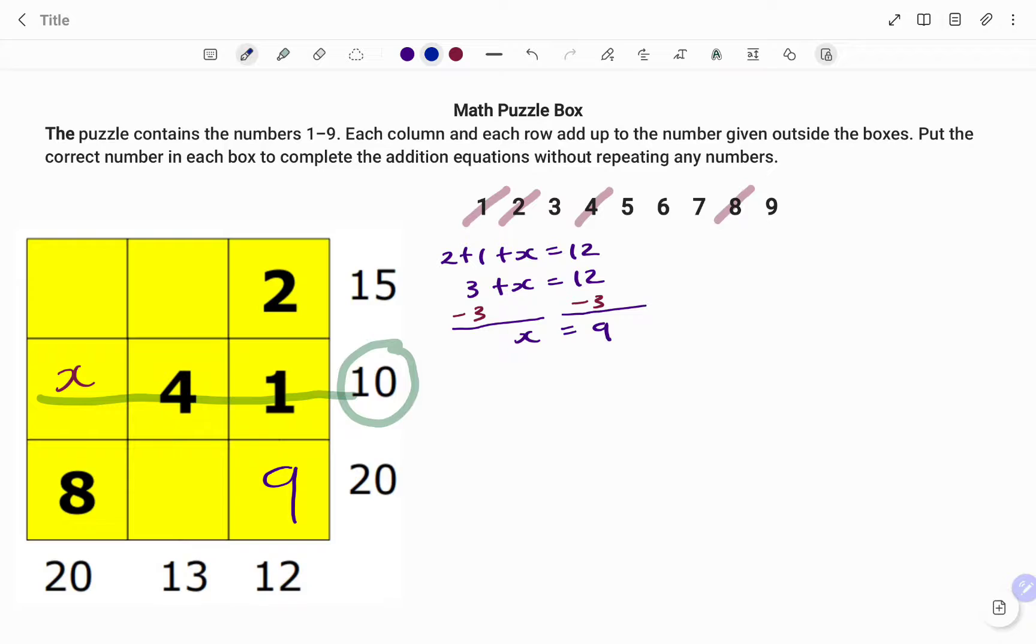So I have x plus 4 plus 1 equals 10. I have x plus 5 equals 10.